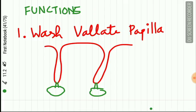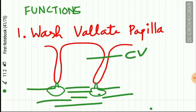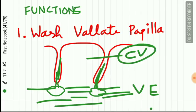The functions of the von Ebner gland are: first, they wash the circumvallate papilla. The gland opens into the trough of the papilla, and the secreted saliva washes away the vallate papilla, making it ready for the next stimulus.